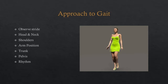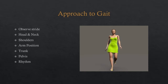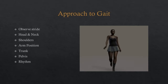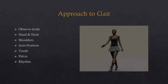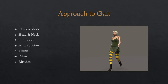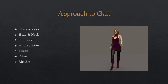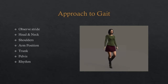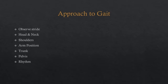Starting with the head and neck, look for changes with walking. Then moving down to the shoulders, assess whether they are level. Determine whether the arms swing equally on either side of the trunk and if there is any truncal deviation. Observe the pelvis to gauge if there is any abnormal tilt. Observe the legs for any abnormalities, and lastly, one would need to assess each phase of the normal gait cycle.